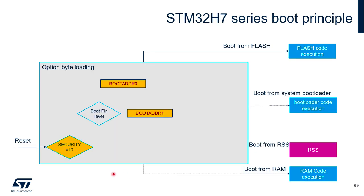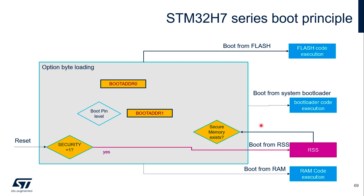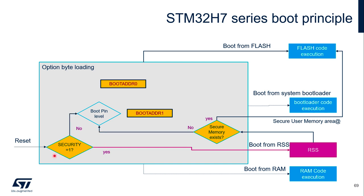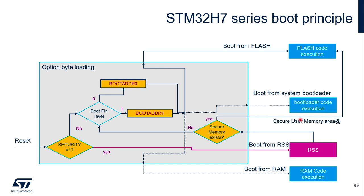Here is the boot principle of the H7 series. As long as security is activated, the system will always boot from RSS. If secure user memory is also defined, RSS will always jump to the secure user memory address in user flash. If there is no secure user memory defined, or if security is not activated on H7, then the boot pin determines whether to use the address from boot address 0 or boot address 1 option bytes, which can be configured to point to internal user flash, system bootloader, or SRAM. When RDP level 2 is set, the boot address is forced to user flash.